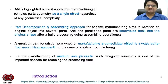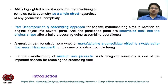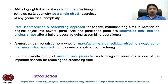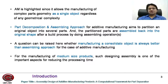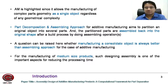In contrast, there is another approach called part decomposition and assembling approach for additive manufacturing, which aims to partition an original object into several pieces, and the partitioned parts are assembled back into the original shape. So there are two additional operations required here: one is appropriate part decomposition and then post-assembling operation. A question arises here — whether manufacturing a consolidated object is always better than the assembling approach?